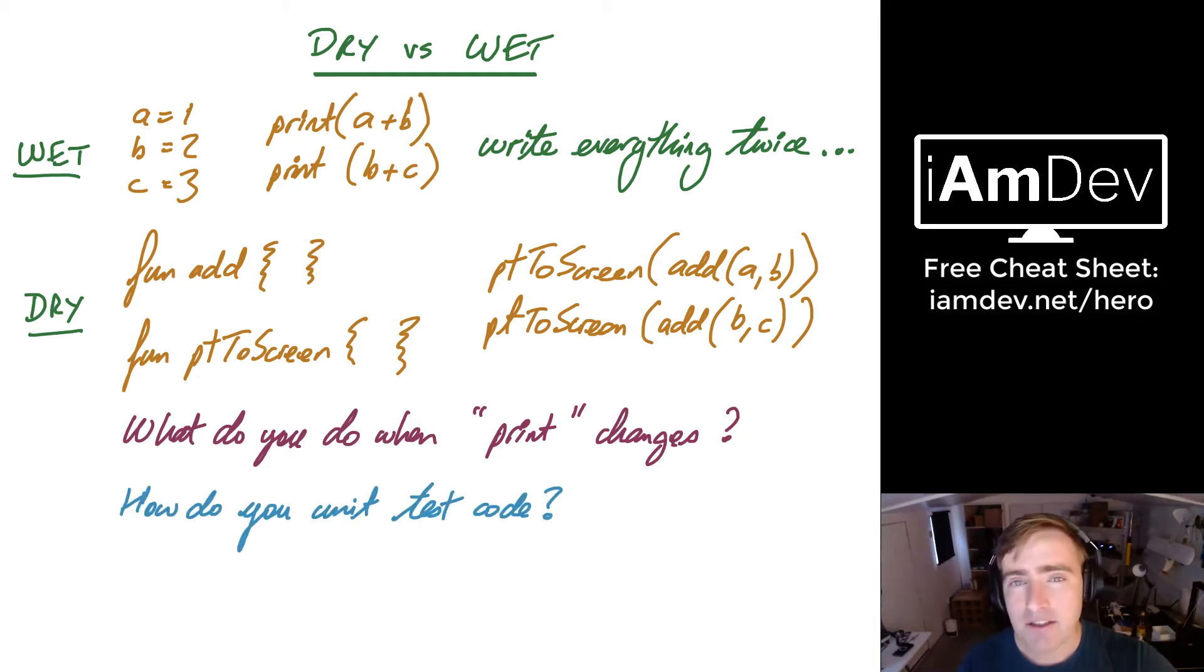The next reason is how do you unit test code? I have an input, I have an output, and I test that block of code every time I run through my test sequence. If you have print everywhere, you won't be able to run a unit test on the print functionality because it's everywhere.